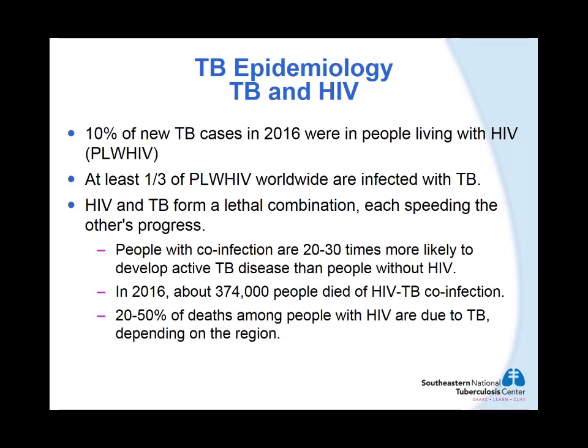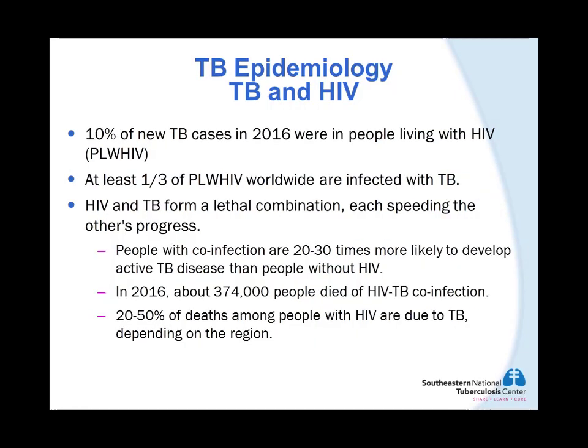In 2016, 10 percent of the new cases were in people living with HIV. It is estimated that at least one-third of the people living with HIV in the world are infected with TB. People with co-infection are 20 to 30 times more likely to develop active TB disease than people without HIV. So HIV and TB form a very bad combination — each of these organisms affects and stimulates the progress of the other. In 2016, about 374,000 people died of HIV-associated TB. Depending on the region, 20 to 50 percent of deaths among people with HIV are due to TB.